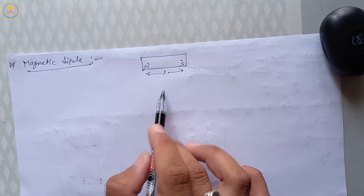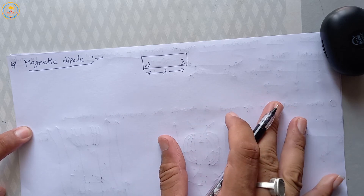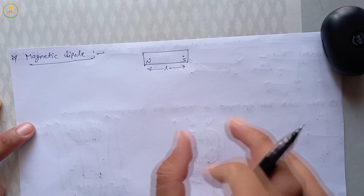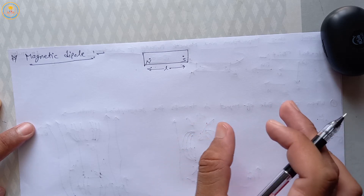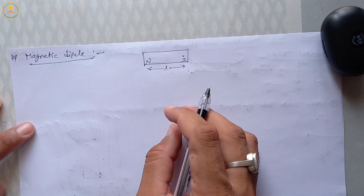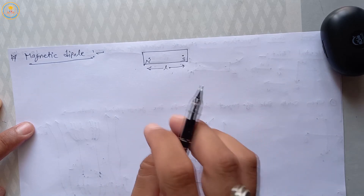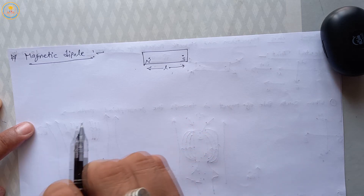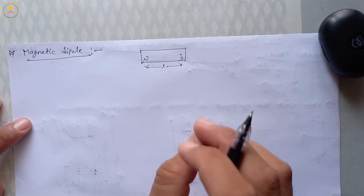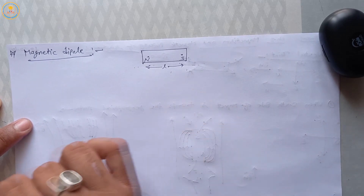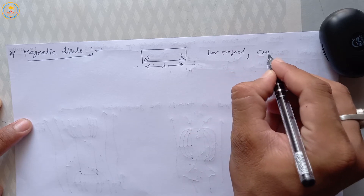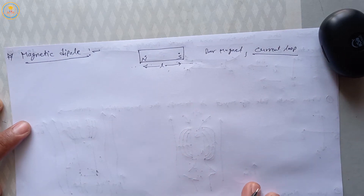In other words, in the first chapter, we saw that if we place an electric dipole in an external electric field, then due to this field, the dipole rotates. Similarly here, a body placed in an external magnetic field — if this body rotates — then this body is called a magnetic dipole. In other words, a bar magnet rotates in a magnetic field just like an electric dipole in an electric field. So a bar magnet is called a magnetic dipole. Examples of magnetic dipoles are: a bar magnet and a current loop.